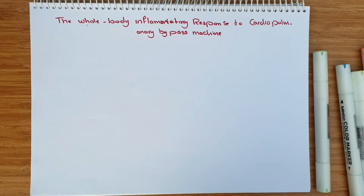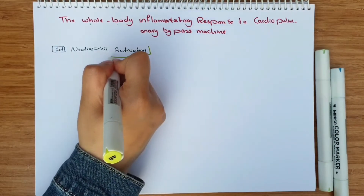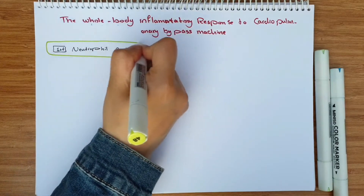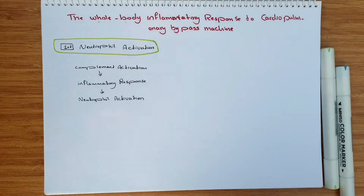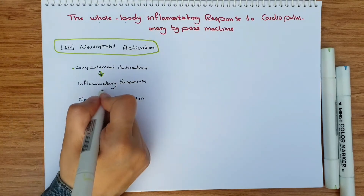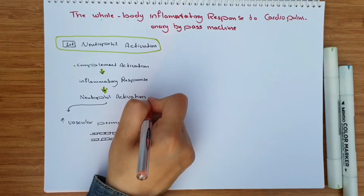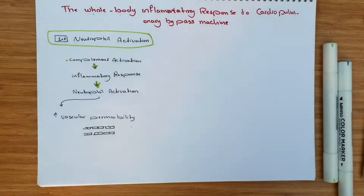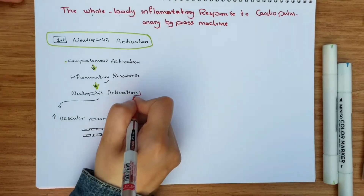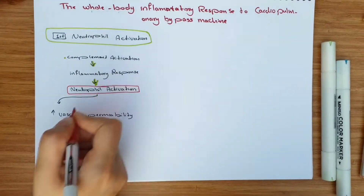In this video I will talk about the whole body inflammatory response to the cardiopulmonary bypass machine. I will start with neutrophil activation. As we know, when there is trauma or injury in our body there will be complement activation, then an inflammatory response, and after that neutrophil activation.